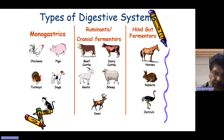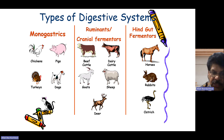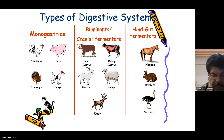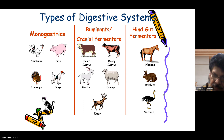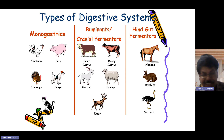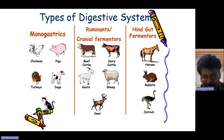The types of digestive systems include monogastric animals like chickens, pigs, turkeys, and dogs. The ruminants, which are cranial fermenters, include beef cattle, dairy cattle, goats, sheep, and deer. The hindgut fermenters include horses, rabbits, and ostriches.